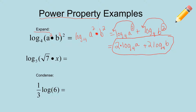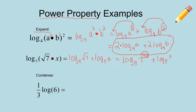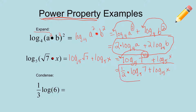Next, log base 5 of the square root of 7 times x. First, break up the product into two logs: log base 5 of the square root of 7 plus log base 5 of x. The square root of 7 can be rewritten as 7 to the 1/2 power. So when you see a square root or radical in expanding or condensing logs, you'll get a fractional exponent. Then use the power property to move that 1/2 in front: 1/2 times log base 5 of 7 plus log base 5 of x. That is your final answer.